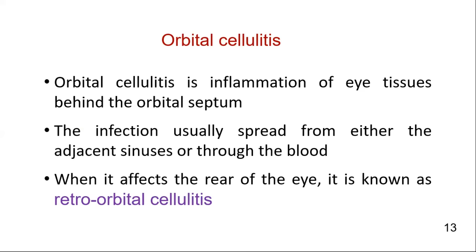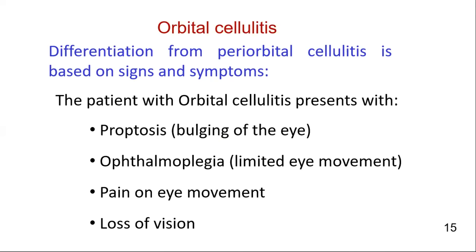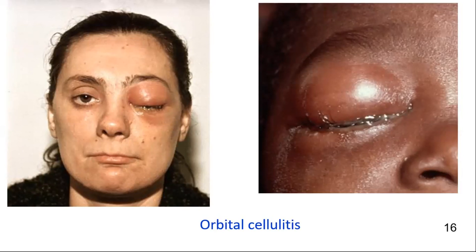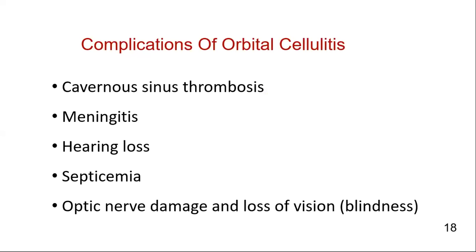A brief overview of orbital cellulitis: orbital cellulitis is inflammation of eye tissues behind the orbital septum. The infection usually spreads from either the adjacent sinuses or through the blood. When it affects the rear of the eye, it is known as retroorbital cellulitis. Signs and symptoms of orbital cellulitis include proptosis, ophthalmoplegia, pain on eye movement, and loss of vision. These signs and symptoms are absent in periorbital cellulitis, making them the differentiating points between the two conditions. Photographs show orbital cellulitis, and CT scan of orbital cellulitis shows proptosis. If orbital cellulitis is not treated properly and in time, it can lead to severe morbidity and mortality.